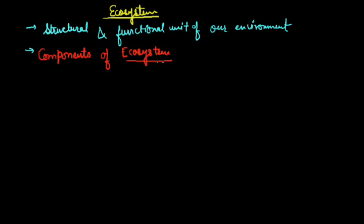So the next point is component of ecosystem. An ecosystem is meetup of two kinds of components. First one is living component, another one is non-living component. Living components are also known as biotic component.